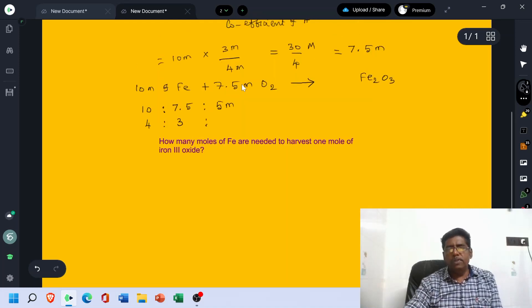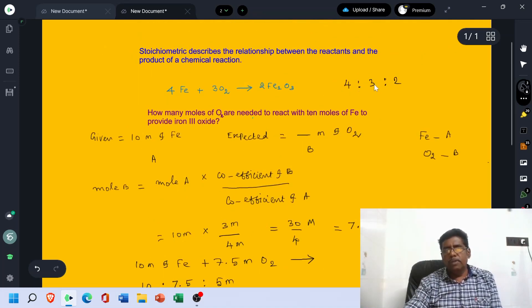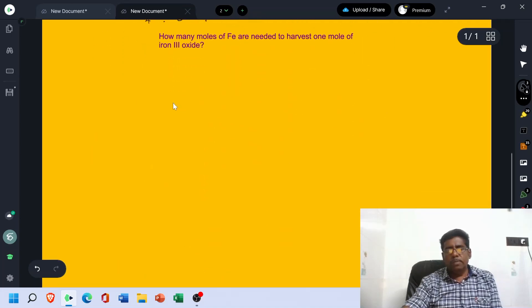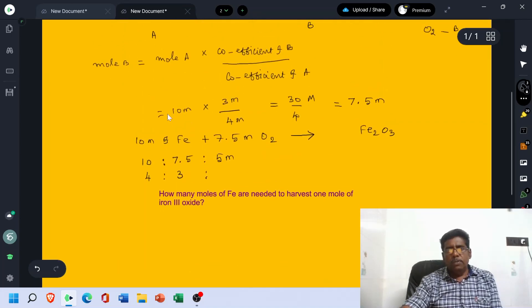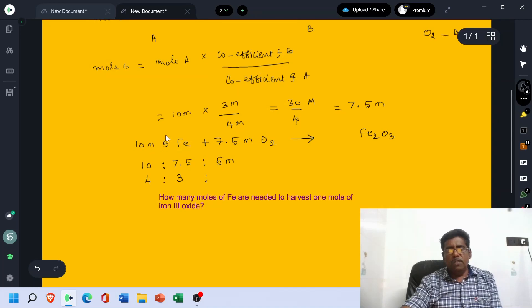Because the ratio is 4 is to 3 is to 2, the amount of Fe2O3 harvested should be half of the amount of Fe taken. Therefore, if you take 10 mols of Fe and then mix 7.5 mol of O2, we can harvest 5 mols of Fe2O3.